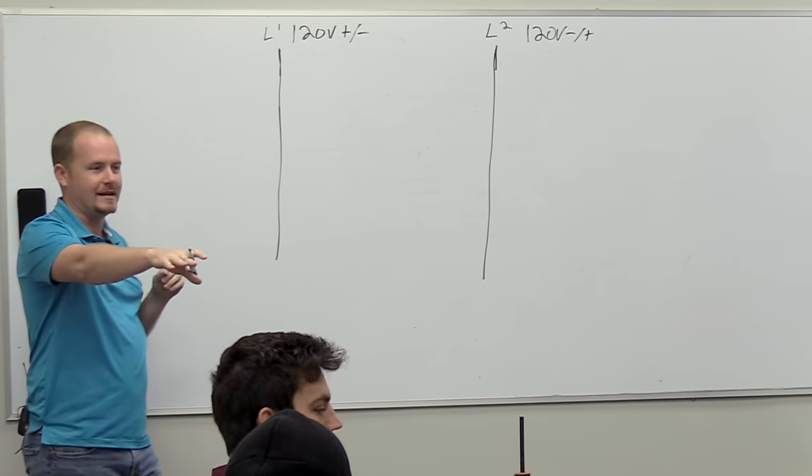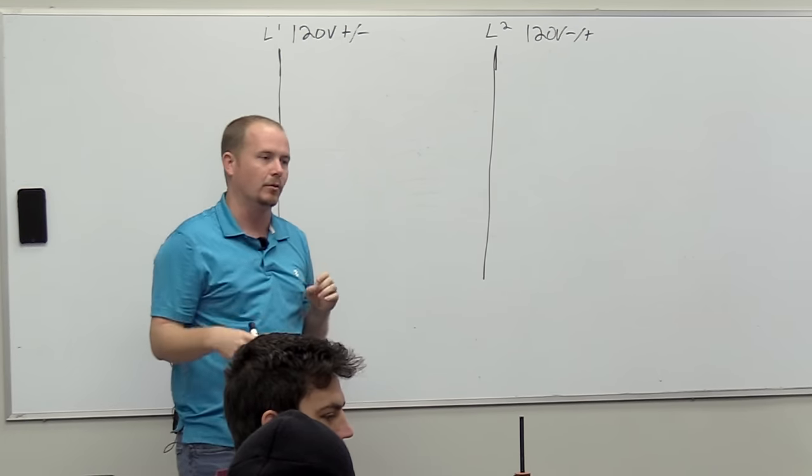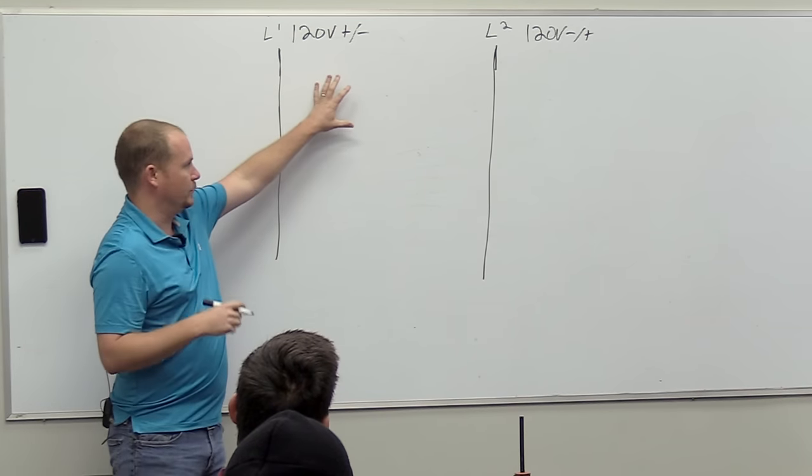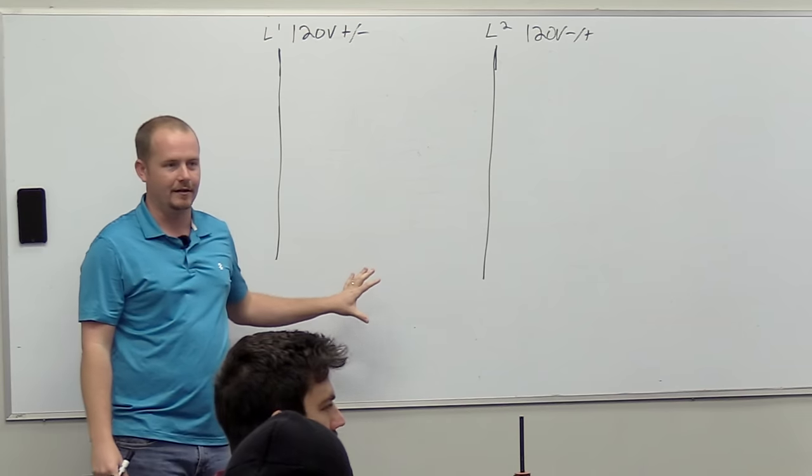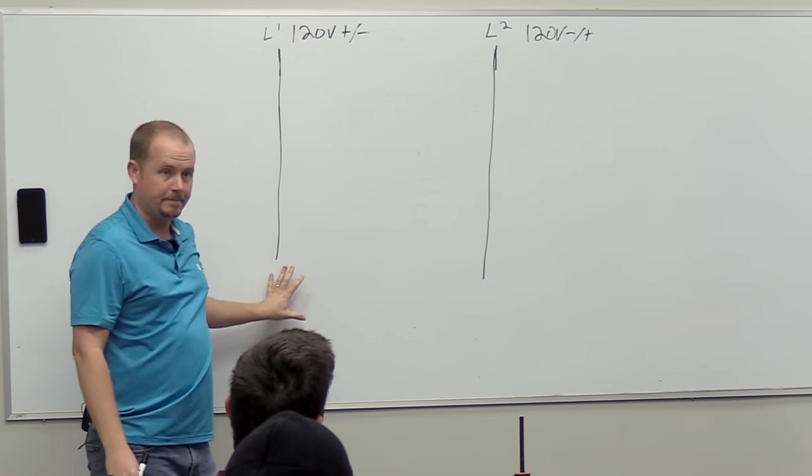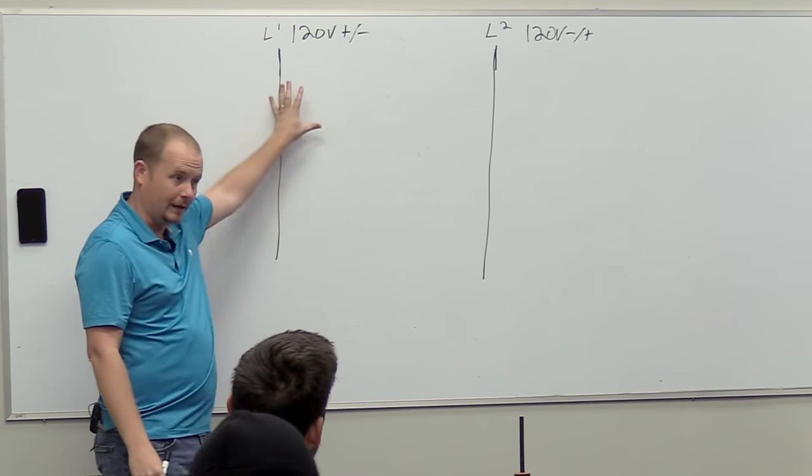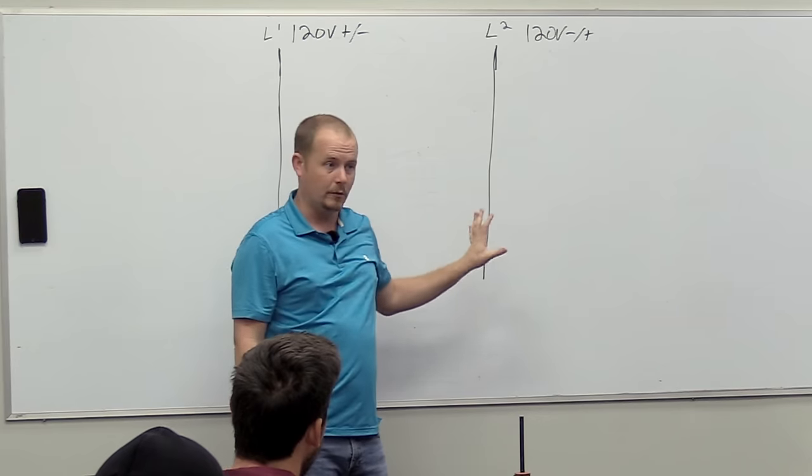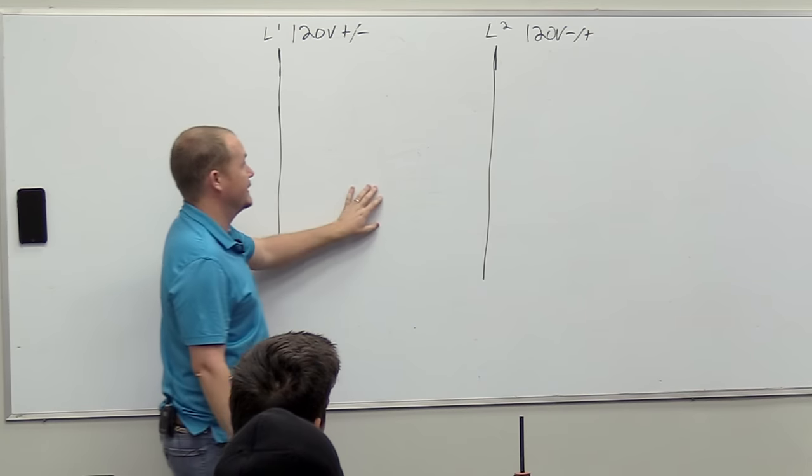And that's where when I see technicians attempting to build it up on the board, they want to replicate the actual physical appearance of the schematic, and that's not the point. This represents line side power on one leg, and this represents line side power on the other leg. Now, one question I want you guys to answer is, what makes these two legs different?